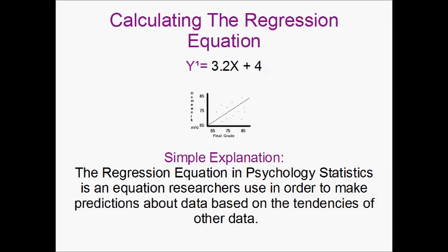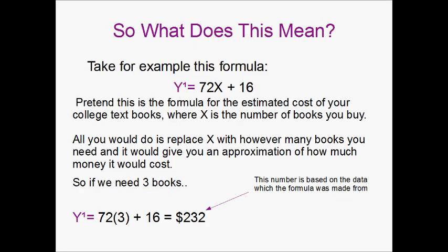Let's go into a little more explanation about what this means. Take for example this formula: Y' = 72X + 16. Pretend this formula is the estimated cost of your college textbooks where X is the number of books you buy. All you would do is replace the X with however many books you need and it would give you an approximation of how much money it would cost.